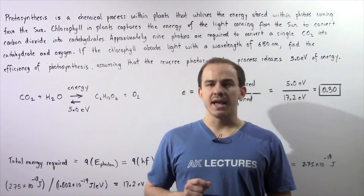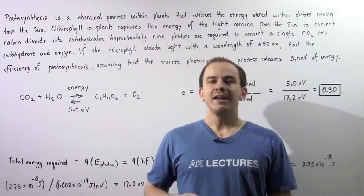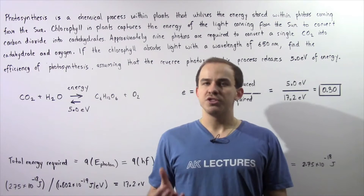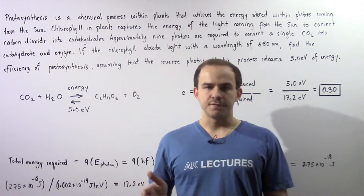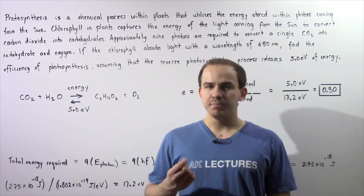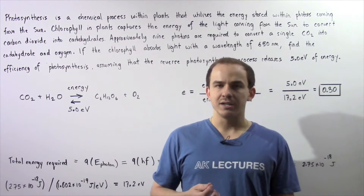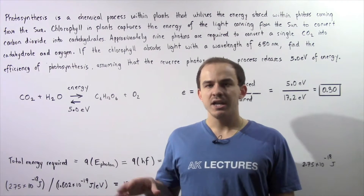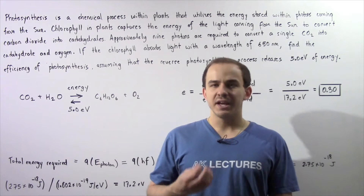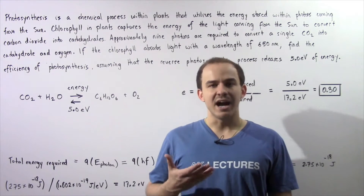Photosynthesis is a very important chemical process that takes place within plants. It allows plants to utilize the energy stored within light that comes from the sun. Chlorophyll, a biochemical in plants, captures the energy found in photons from the sun and uses that energy to transform carbon dioxide and water into carbohydrate and oxygen.